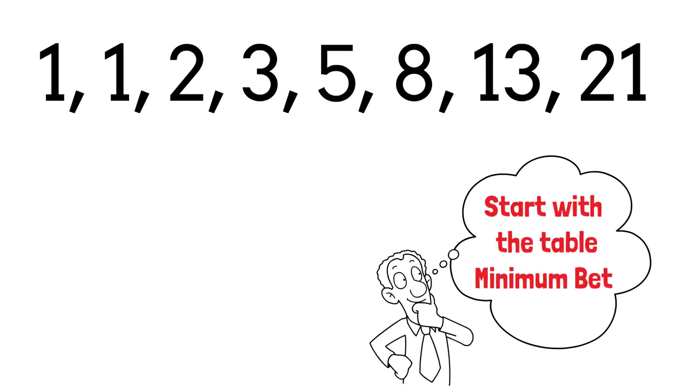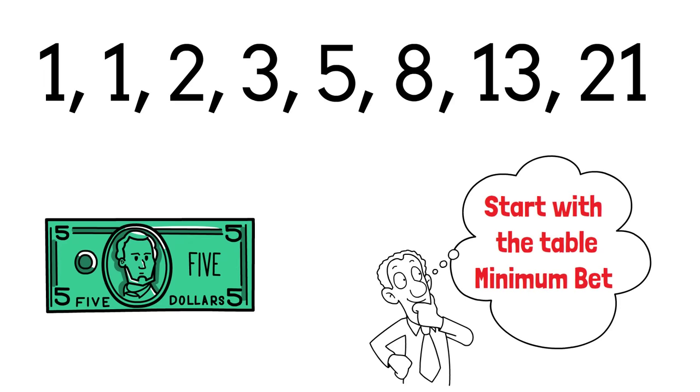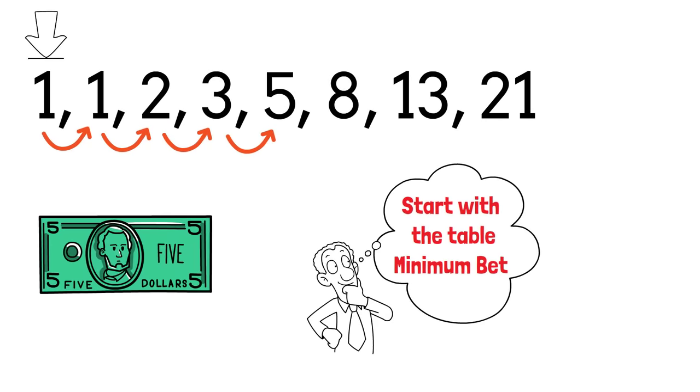In the Fibonacci system, each number in the sequence represents a betting unit. As the sequence can start to compound quickly in a short amount of time, my first recommendation is that you start with the table minimum bet. At the beginning of the sequence and every time you face a loss, advance one number to the right. However, when fortune smiles upon you with a win, reset to the beginning of the sequence.